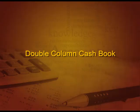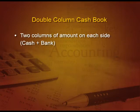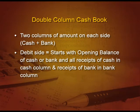Coming to the next — double column cash book. As the name suggests, there are two columns: one of cash and one of bank. The debit side starts with opening balance of both cash as well as bank. Then all the receipts of cash go in the cash column and the receipts of bank go in the bank column. Similar treatment for the credit side also.